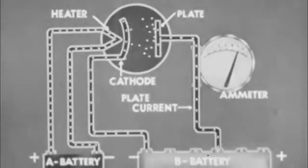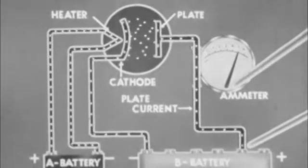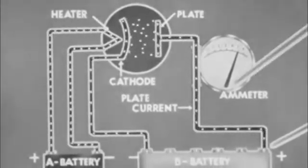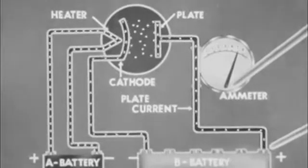However, when the plate voltage is made still higher, no change is seen in plate current. We have reached the limit of the tube. This limit, known as saturation, is the point at which all available electrons are attracted to the plate.